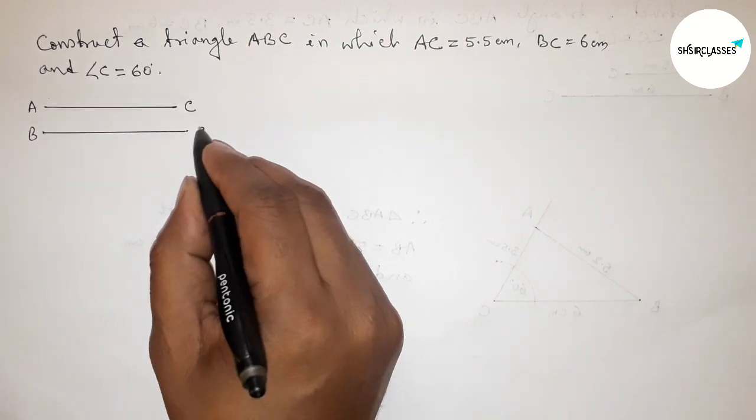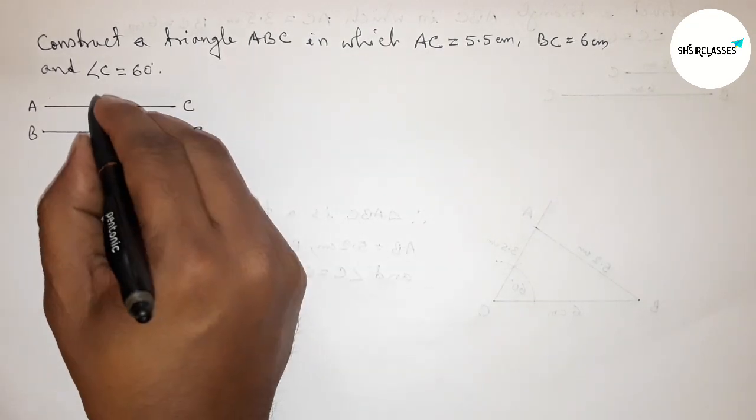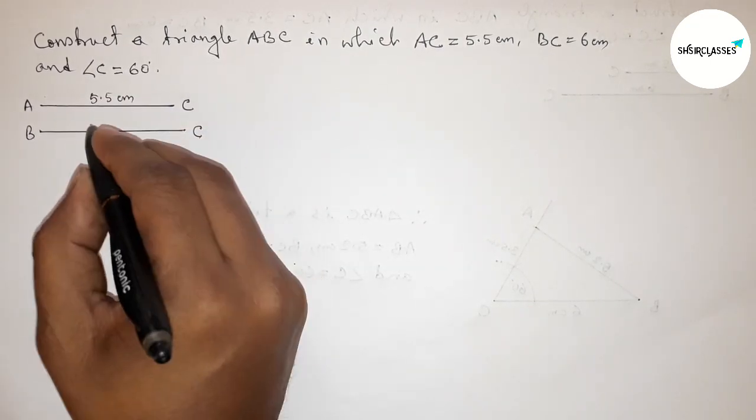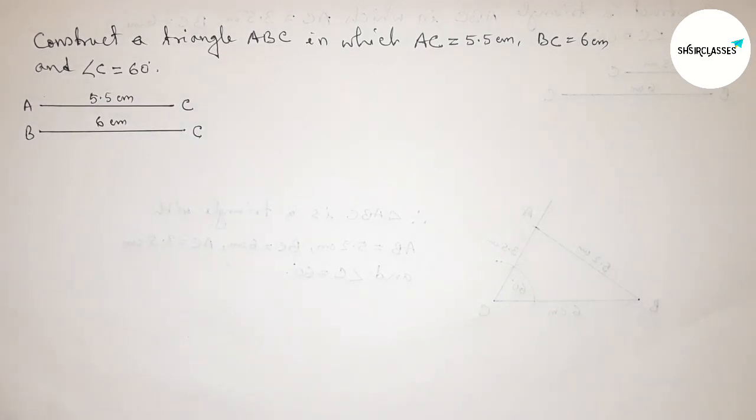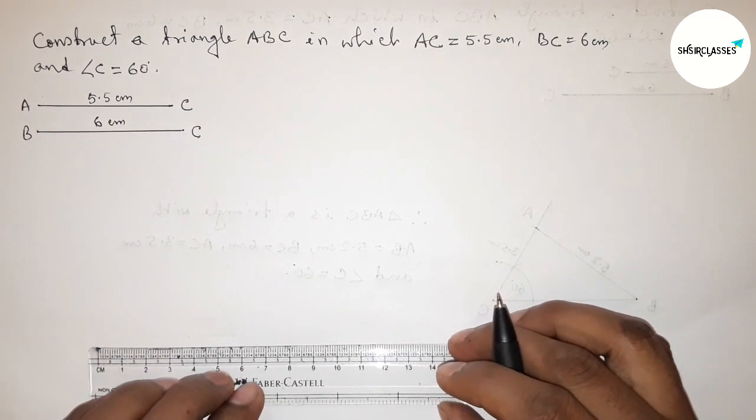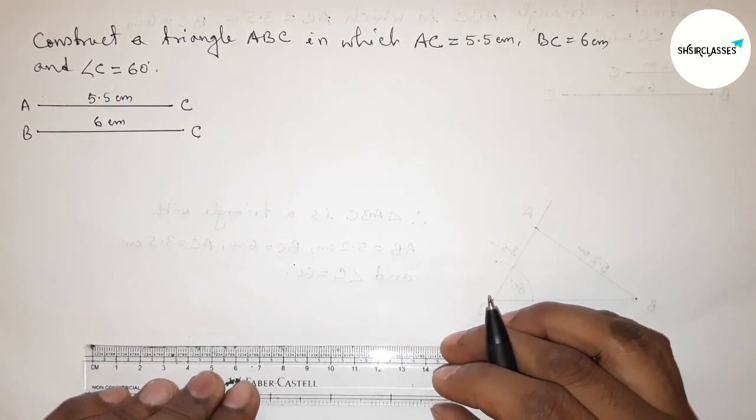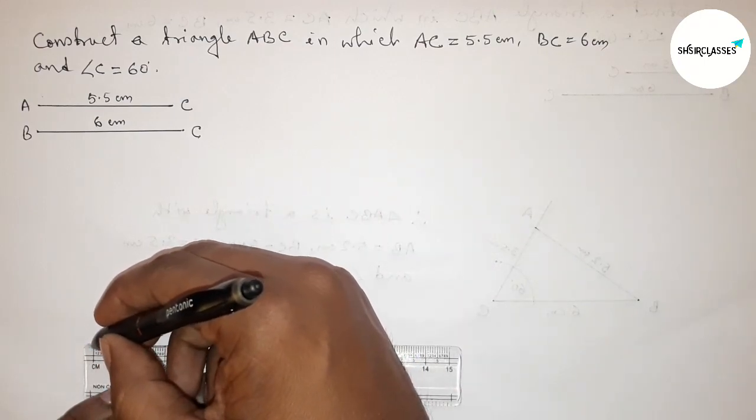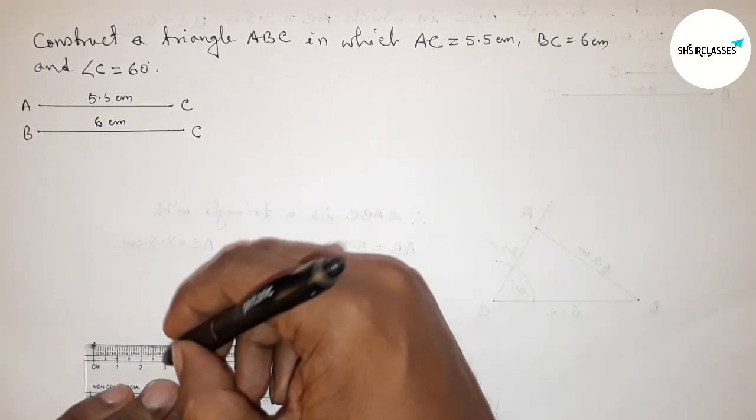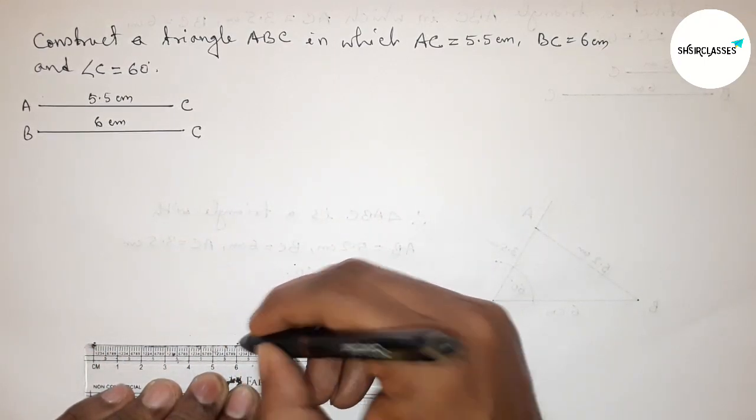So this one is AC line and this one is BC. So AC is 5.5 centimeter and this one is 6 centimeter. Again we have to draw here the line BC equals 6 centimeter. So starting 0, 1, 2, 3, 4, 5, 6. So this is 6 centimeter.